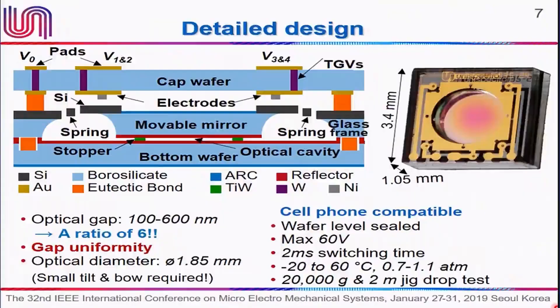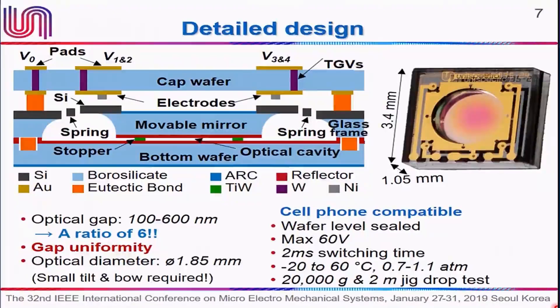This device was designed bottom-up to be cell phone compatible and cell phone embeddable. It is wafer-level sealed. We faced challenges in assuring that it can operate over a broad temperature and pressure range, and that it is robust and reliable enough to withstand drop and shock tests. We were very conservative and designed it to withstand 20,000 G, which is actually a military standard, going beyond what is required for mobile phones.